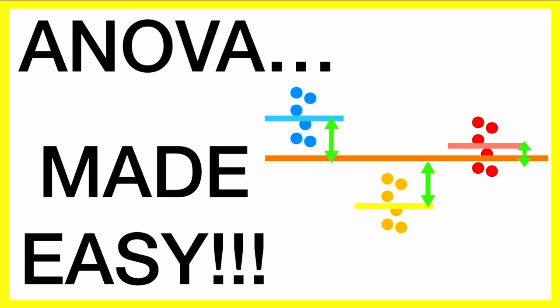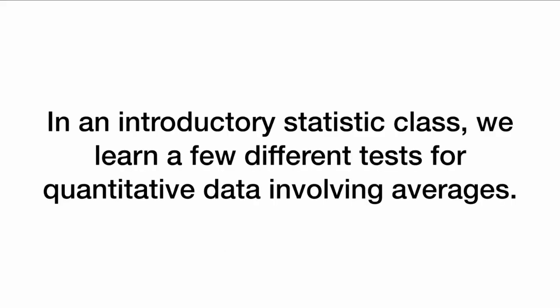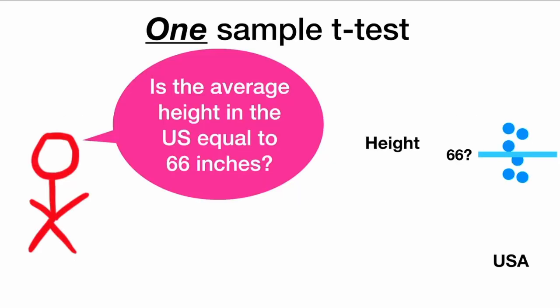Let's learn about ANOVA. In an introductory statistics class, we learn a few different tests for quantitative data involving averages. First, you might learn about a one-sample t-test. We might want to ask a question like, is the average height in the U.S. equal to 66 inches? We are using one sample of data from the United States.